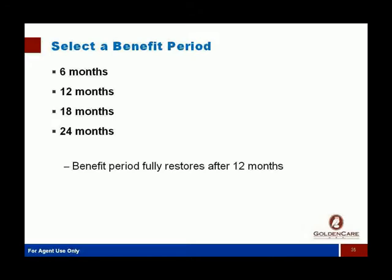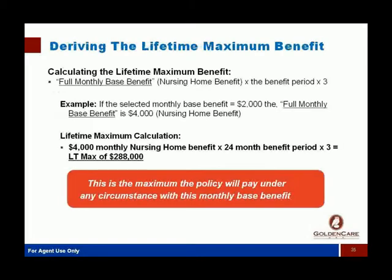Then you select a benefit period: 6, 12, 18, or 24 months — those same four choices in most states. One of the key differences from traditional critical illness: most CI plans pay the benefit and then go away. This policy is designed to be more like long-term care insurance and more robust. It gives you the ability to have multiple claims through what they call benefit restoration — if you have a critical illness and then 12 months after the last check is paid you're diagnosed with another covered critical illness, this policy could pay again.